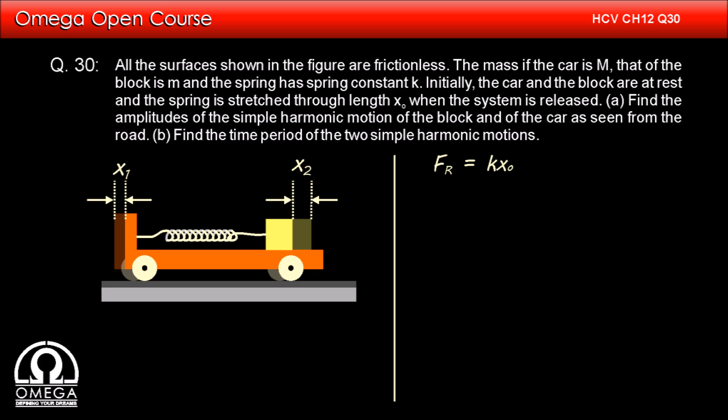Let us find out the time period of the car. If we assume the elongation in the spring at any instant be X knot, then the restoring force acting on the car is K into X knot, which implies capital M into omega square into X1 is equal to K into X knot, where omega is the angular frequency of the oscillation and X1 is the displacement at that instant in the car.